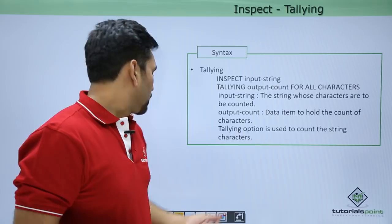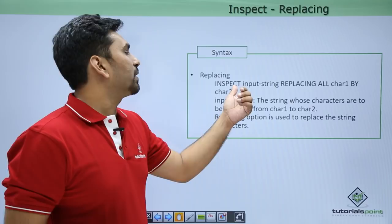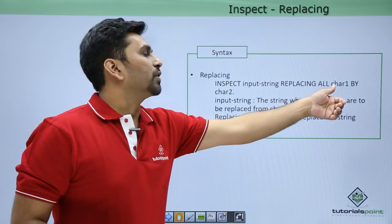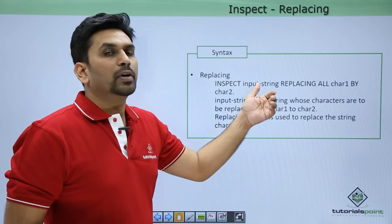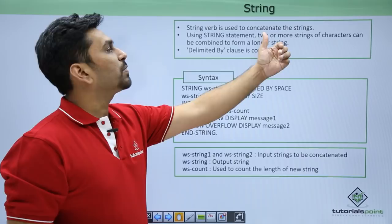Next is REPLACING. This is used to replace the string characters. The syntax is: INSPECT input-string REPLACING ALL character-one BY character-two. For example, if you specify A and B, it will replace all the A's in the string with B. Next is the STRING verb, which is used to concatenate two or more strings. The DELIMITED BY clause is compulsory here.